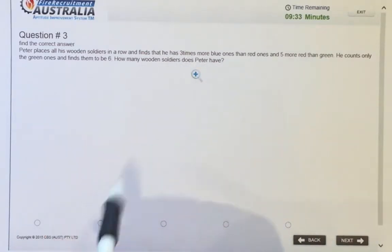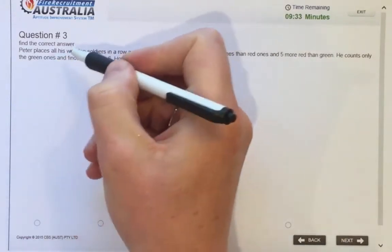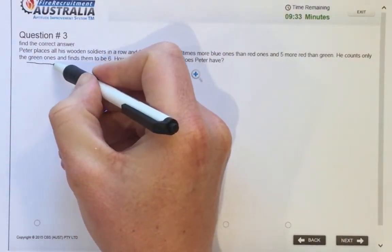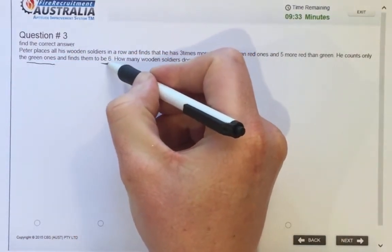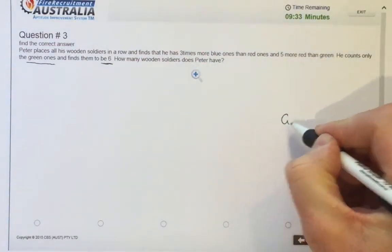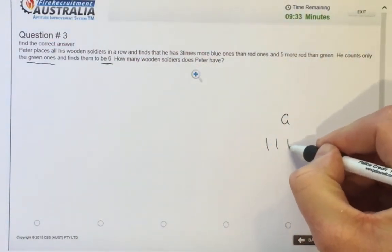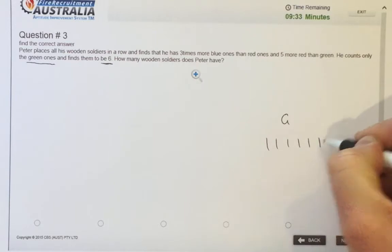So I need to take the information that we've got. He's got six green ones. So green, one, two, three, four, five, six.